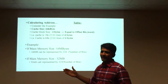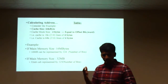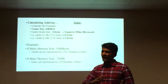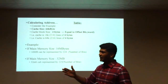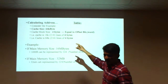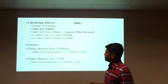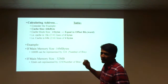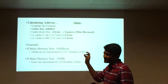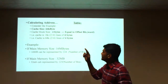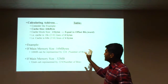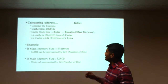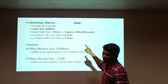To calculate the address, consider an example: cache memory size is 64 KB and main memory size is 16 KB. The memory can be divided into blocks, where each block size is four bytes. The block size is equivalent to the offset bit.